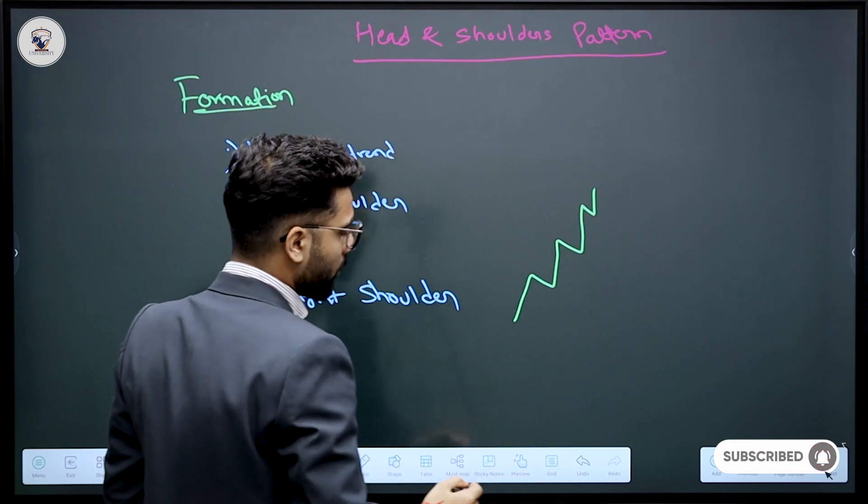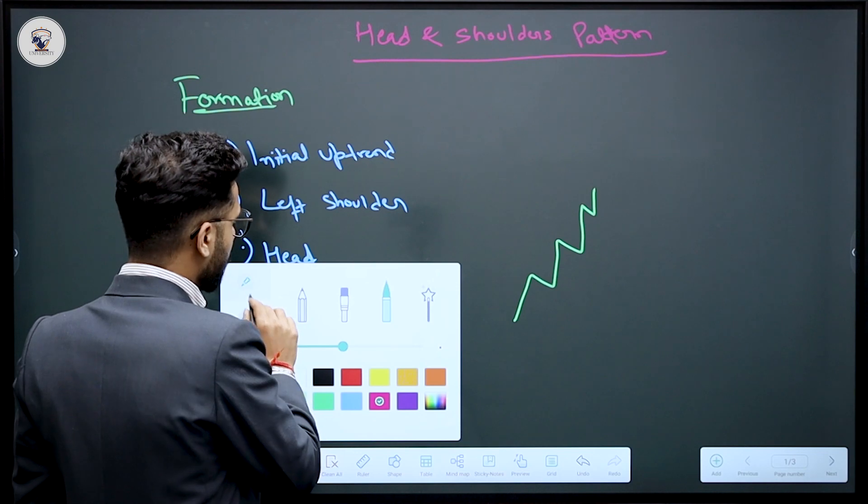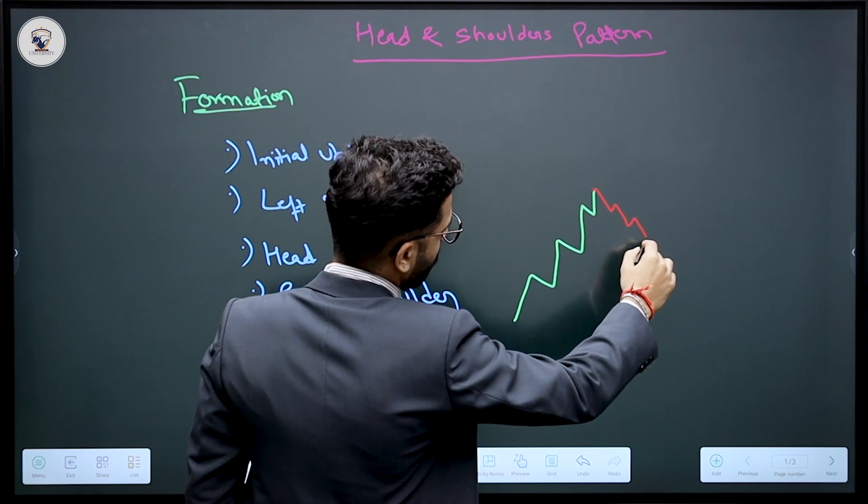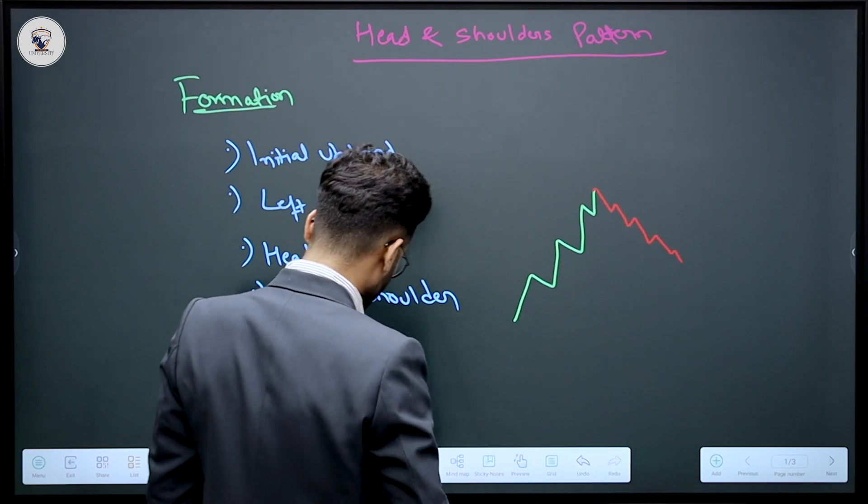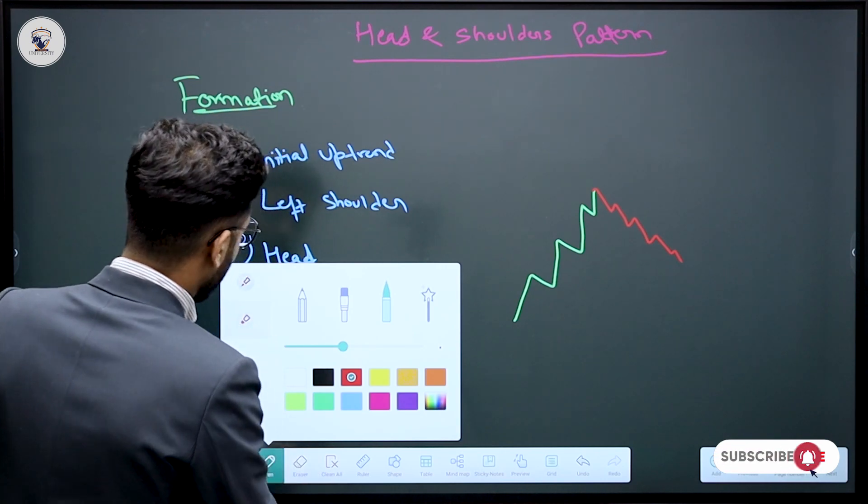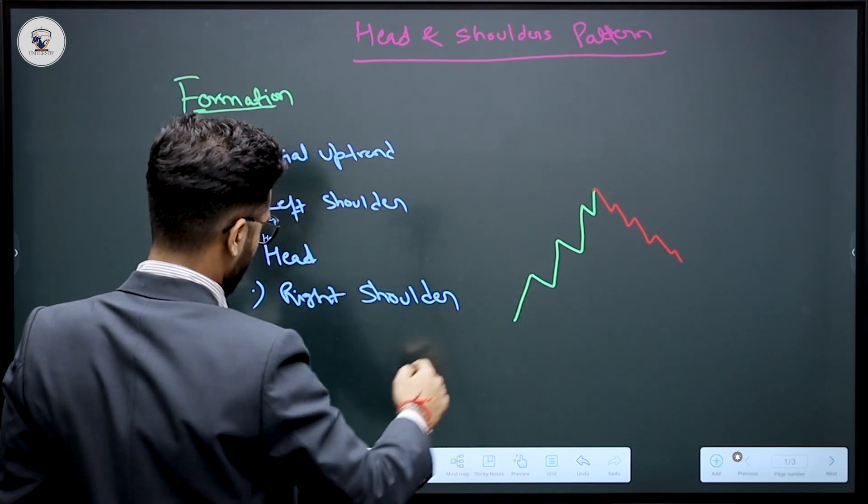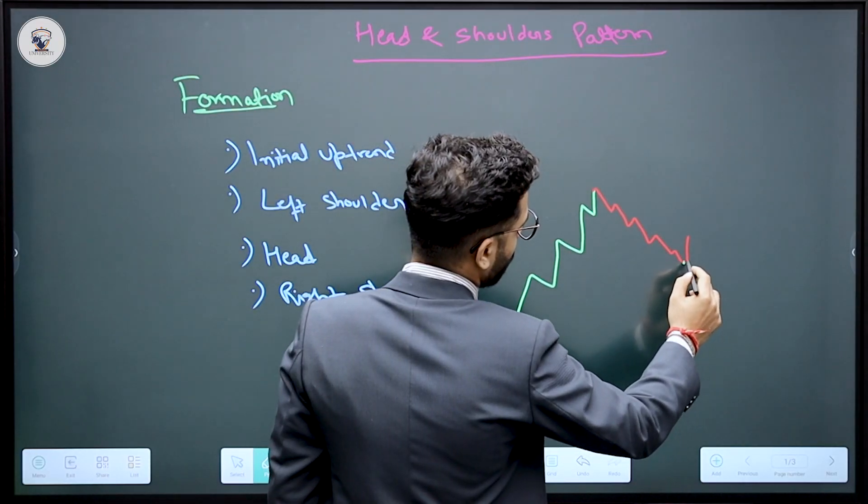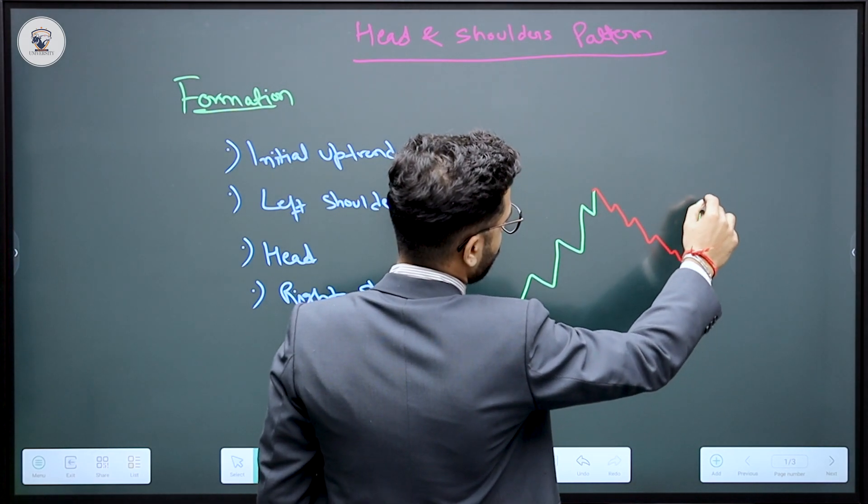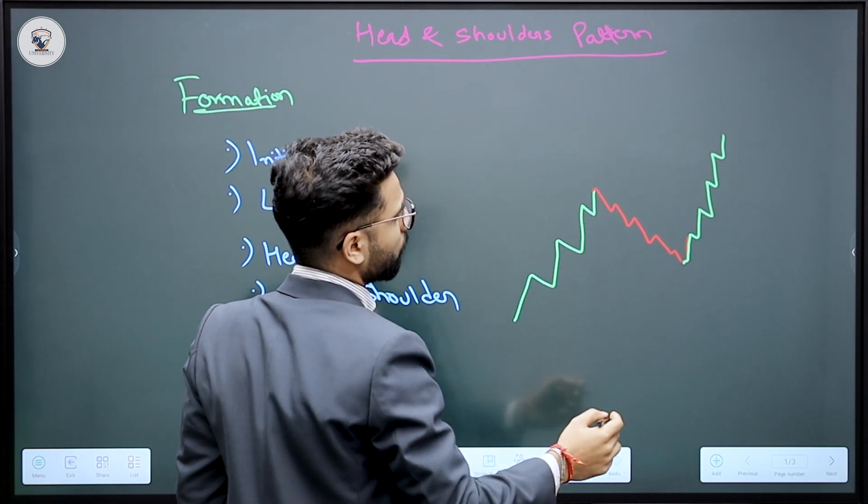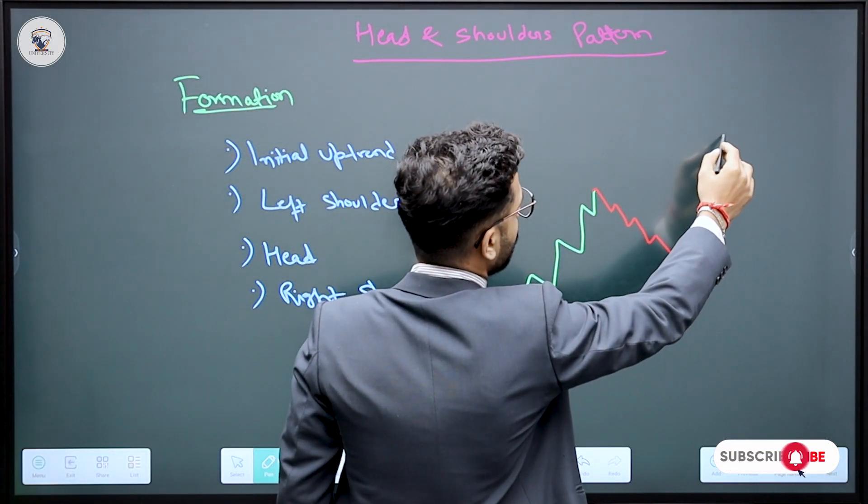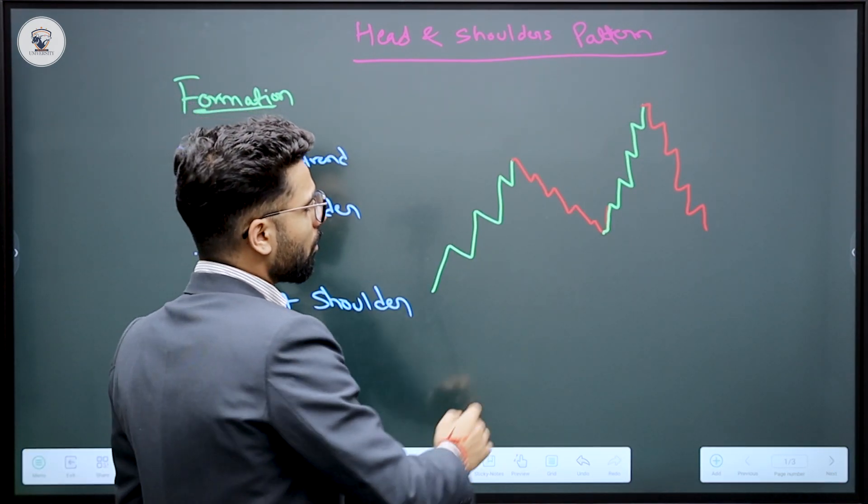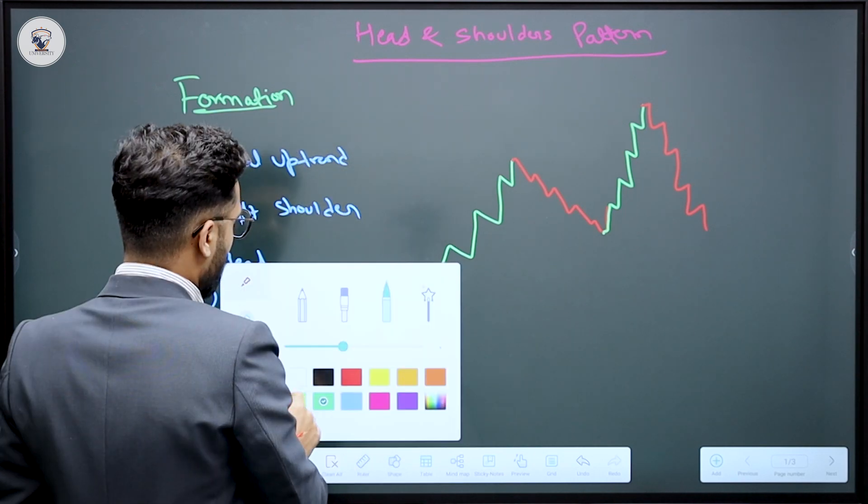Now, there is a little retracement in the uptrend. You get a little correction in the stock. You have seen that the initial uptrend, you get a little breakdown, you get a little reflection. After that, it is going up to market which is going up and it is bouncing back.